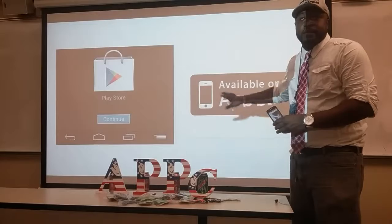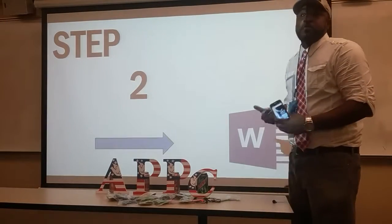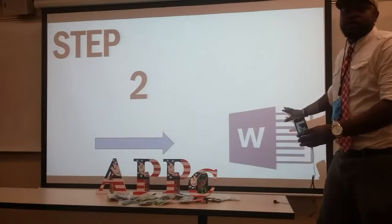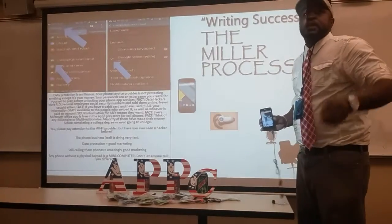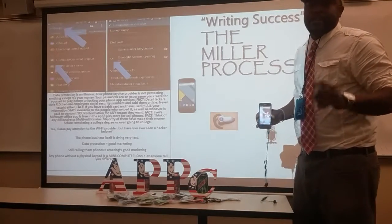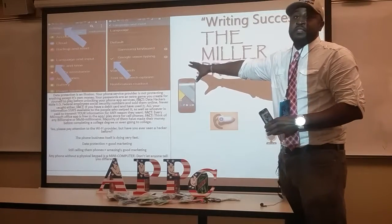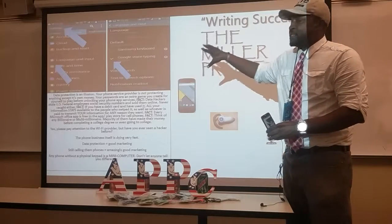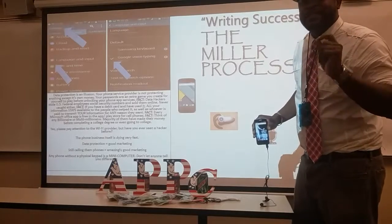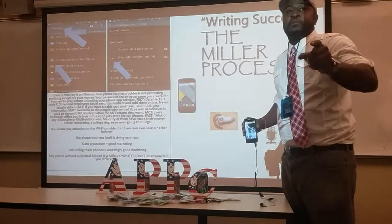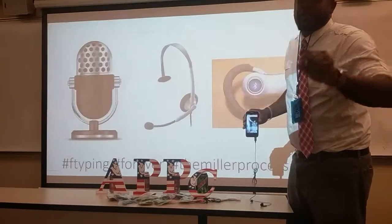Get your cell phone and download the free apps from the Android store or the iPhone store. Download the Word program offered for free using the school's Wi-Fi, then press the microphone button. If you cannot find the microphone button, it's usually right next to the space bar in a little small box. Otherwise, go to your settings, look for language and input, find voice typing or speech-to-text typing. Enable means yes, disable means no — so enable your voice typing to ensure you can use it on your cell phone.